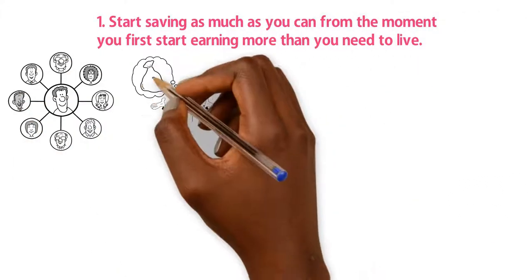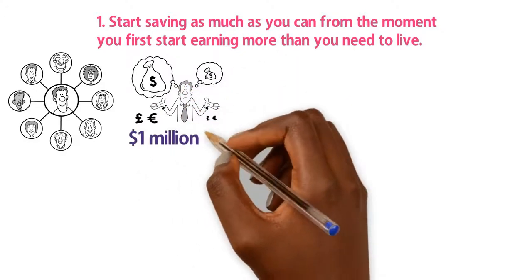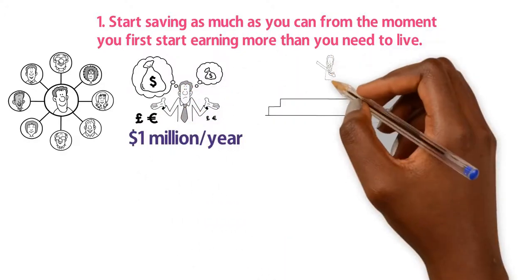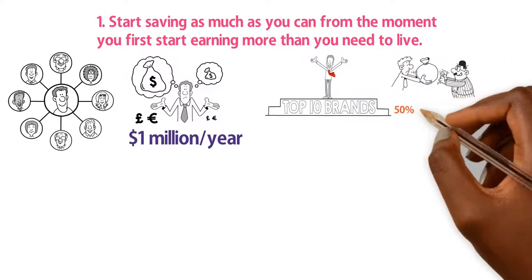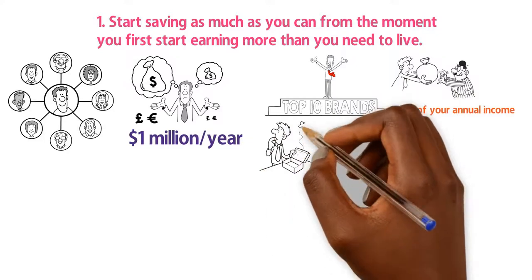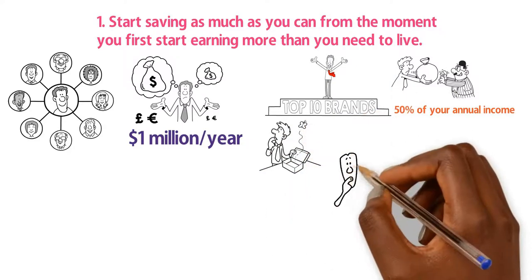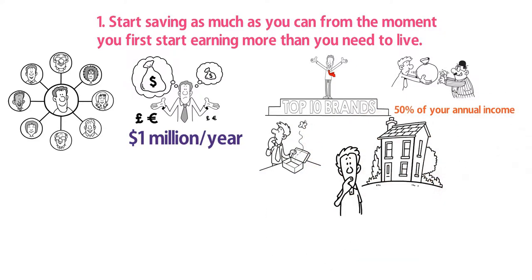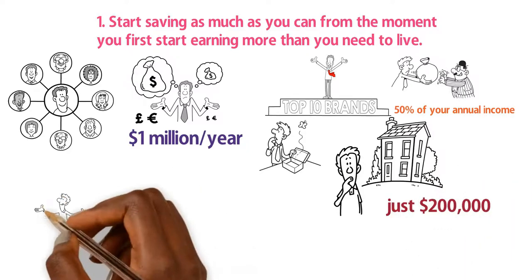Most people think that the only way to become a millionaire is to earn at least a million a year. But even if you're one of the top earners in the world, taxes will eat away roughly 50% of your income annually. Then after you deduct living expenses, the cost of rent or a mortgage, and a few vacations, you might end up with just $200,000 if that.